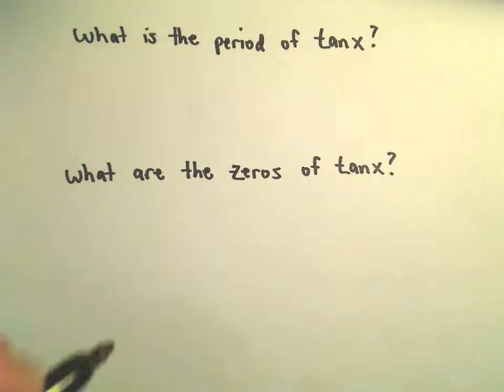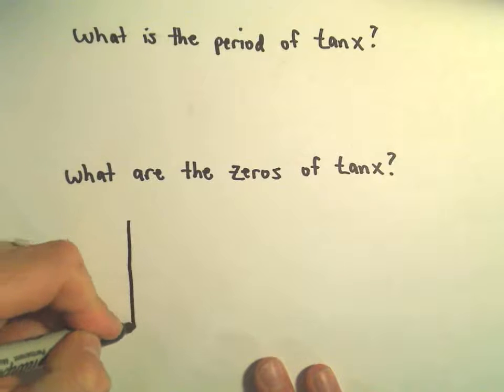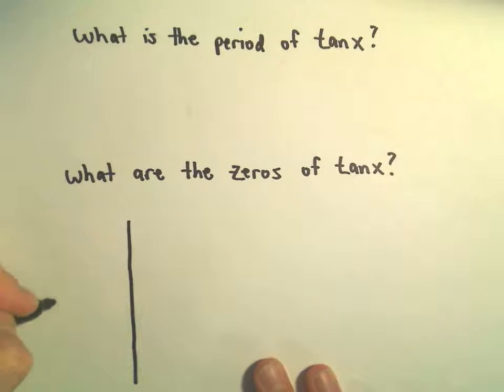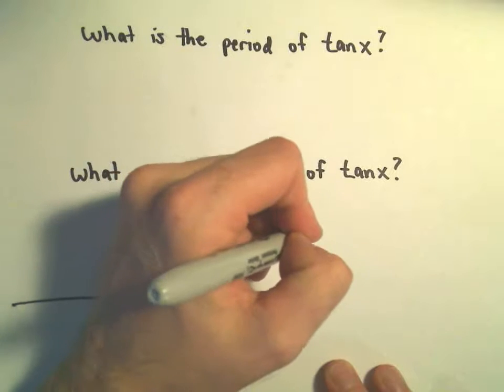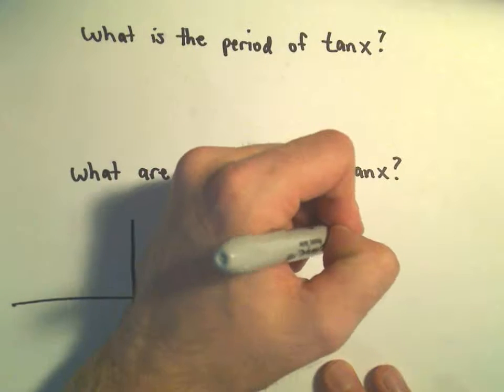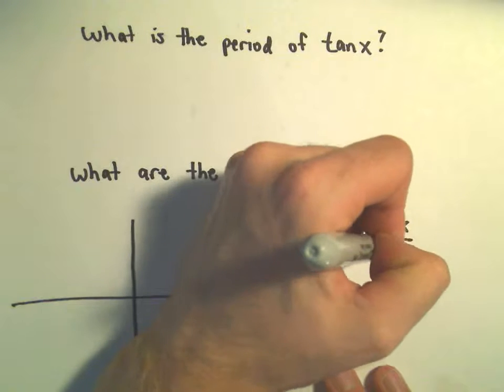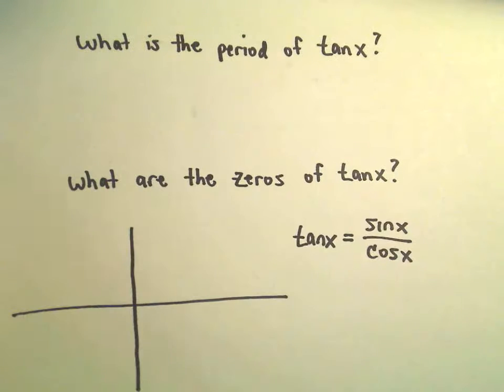I think the easiest way to address this is to remember the graph. To get this graph you can plot points, whatever you want to do. Tangent of x, we can define that to be sine of x over cosine of x.